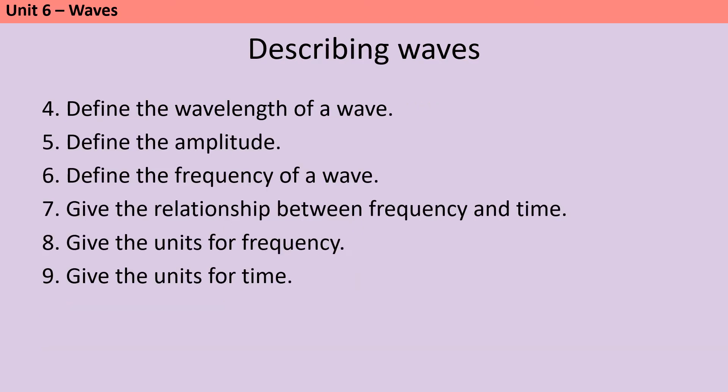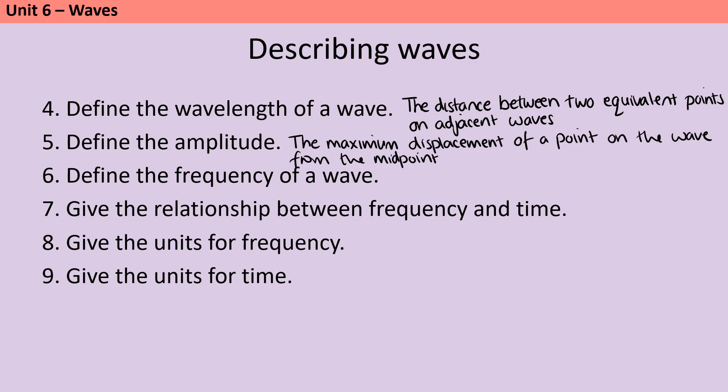The wavelength of a wave is the distance between any two equivalent points on two adjacent waves, so in other words the distance between the two peaks or the two troughs. The amplitude of a wave is half the height of that wave, and we can define it as the maximum distance that the wave has been displaced away from that midpoint. The frequency of a wave is the number of waves that pass a particular point per second, and it's the reciprocal of the time, so in other words if you know the frequency then 1 divided by frequency is time, and if you know the time, so the period of one wave, then 1 divided by time is frequency. Frequency is measured in hertz, and hertz are equivalent to seconds to the minus 1, and time is measured in seconds.